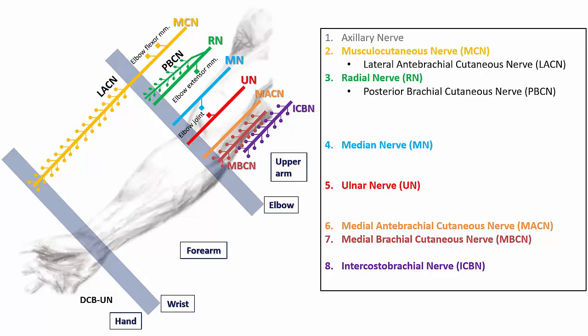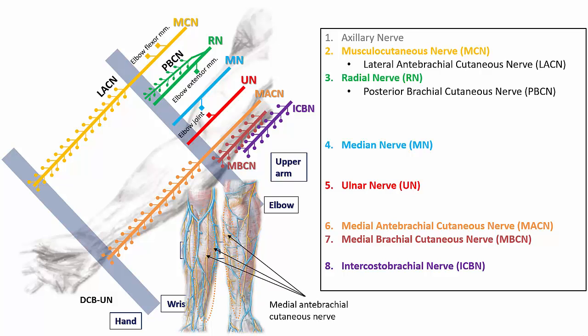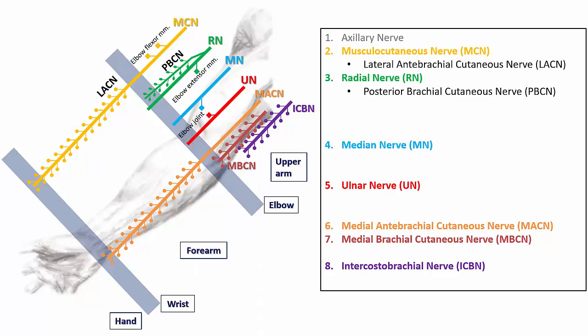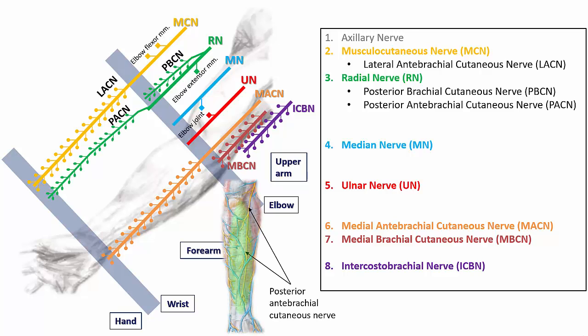The medial antebrachial cutaneous nerve is the counterpart to the lateral antebrachial cutaneous nerve, innervating the cutaneous tissues on the medial aspect of the forearm and wrist. At the elbow, the radial nerve gives off the posterior antebrachial cutaneous nerve, which innervates the cutaneous tissues of the posterior forearm all the way to the wrist.